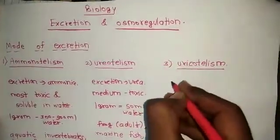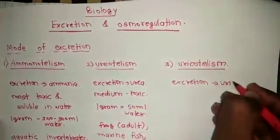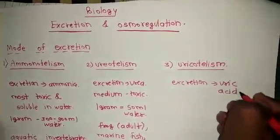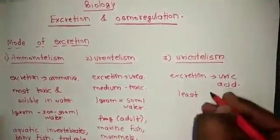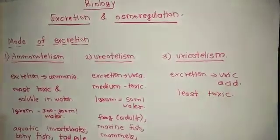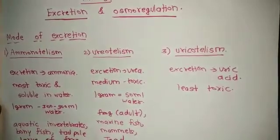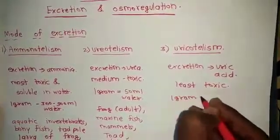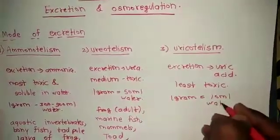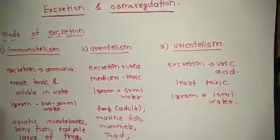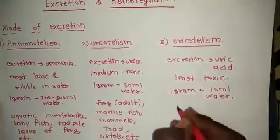Uricotelism means excretion in the form of uric acid. Uric acid is the least toxic — less toxic — and 1 gram of uric acid is eliminated by only 10 ml of water. Uric acid can be tolerated for a long duration.